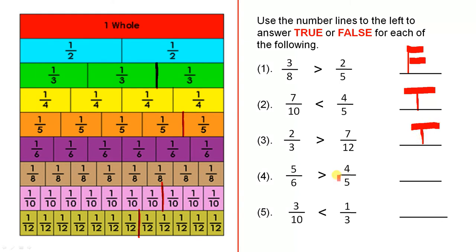5 sixths is greater than 4 fifths. Let's look at where 5 sixths are — 1, 2, 3, 4, 5 — there's 5 sixths. Let's look at where 4 fifths are — 1, 2, 3, 4 — so there's 4 fifths. You can see that 5 sixths is just greater than 4 fifths, so that is true.